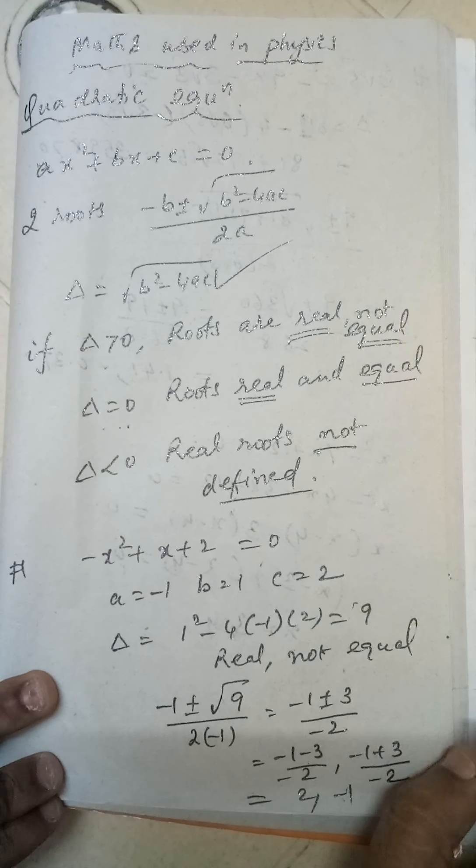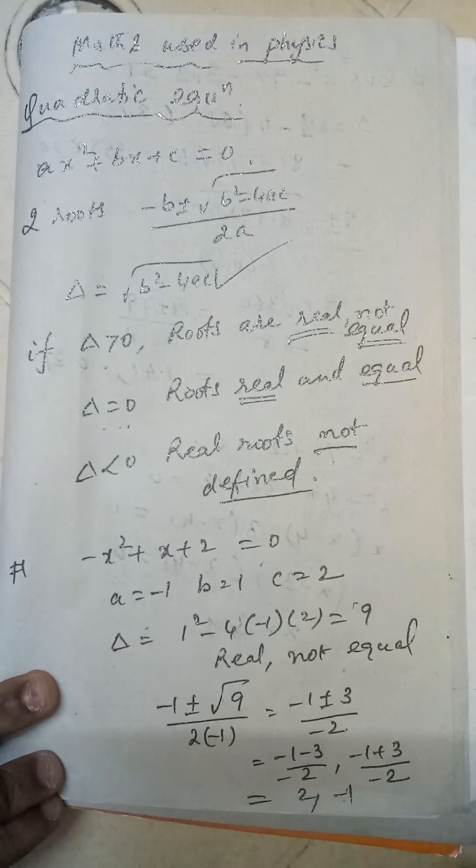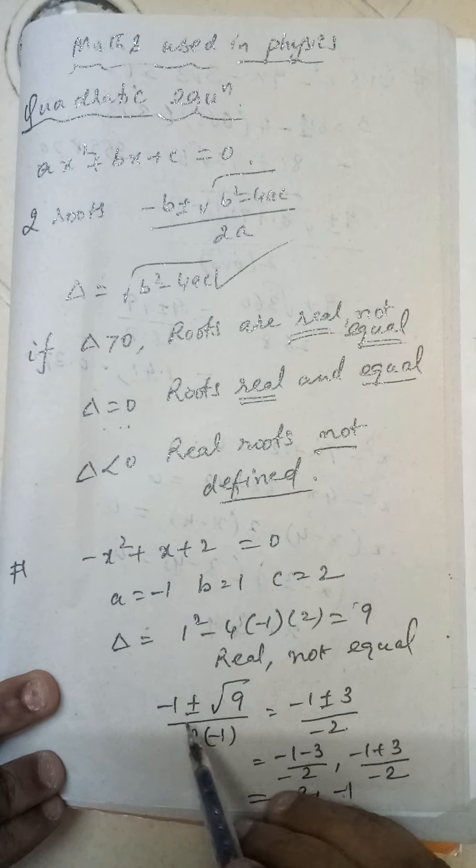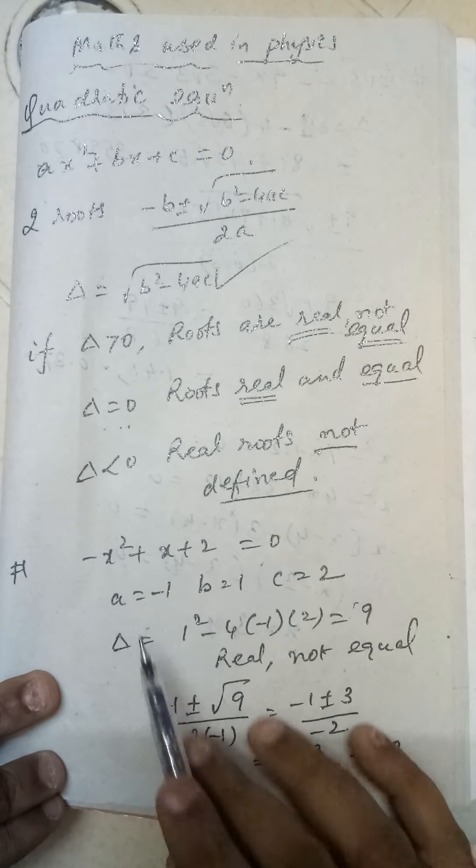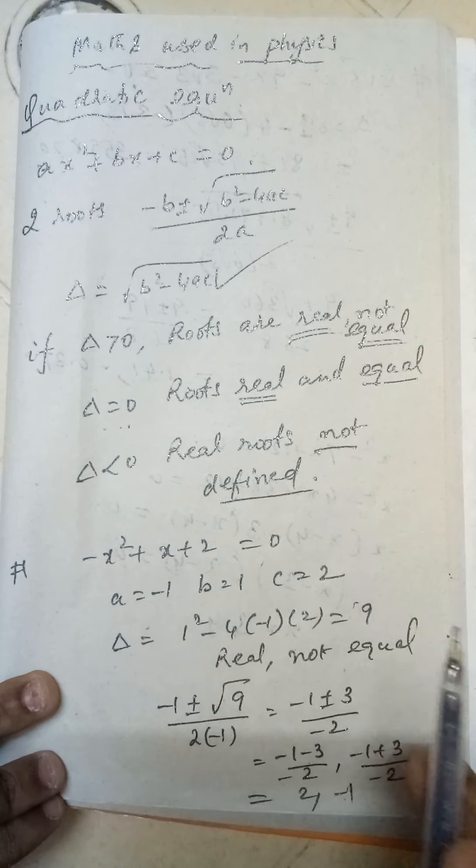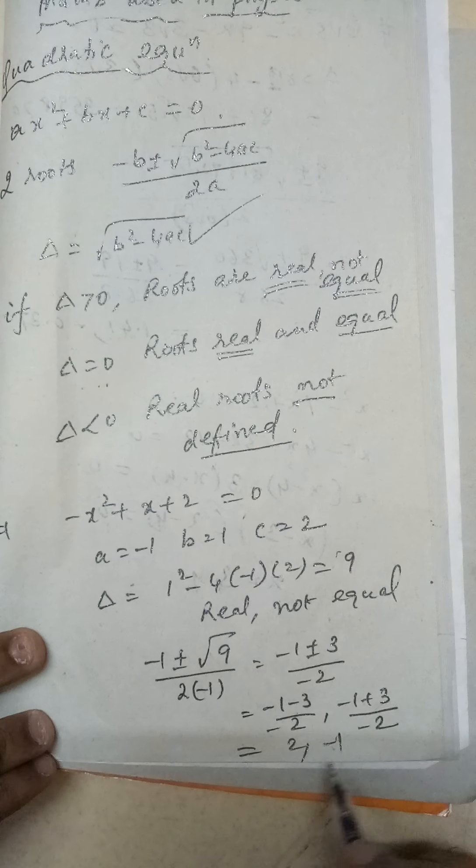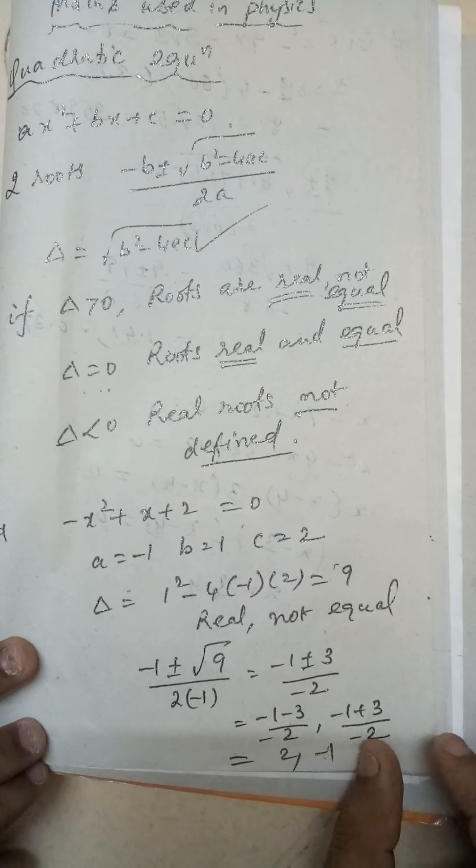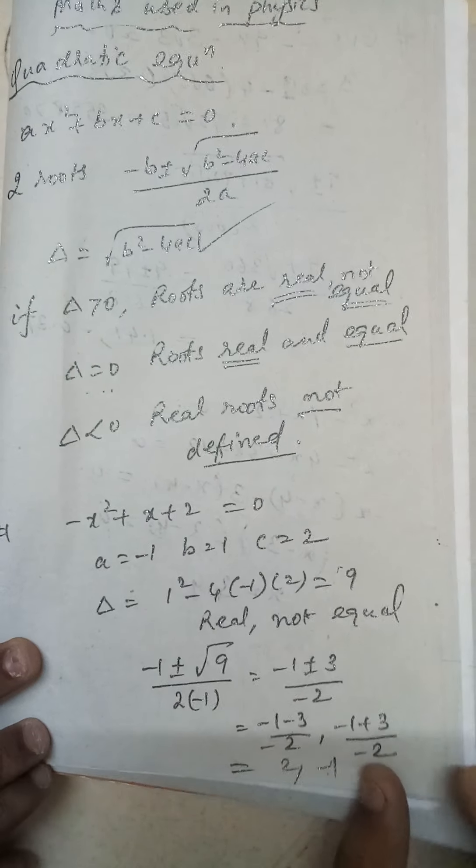9 is greater than 0, so the roots are real and not equal. So we can find the roots: (-1 ± √9) / (2×(-1)). If you solve, you get 2 and -1. So you got two roots and both are unequal.